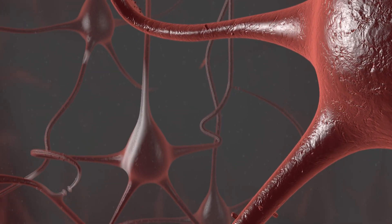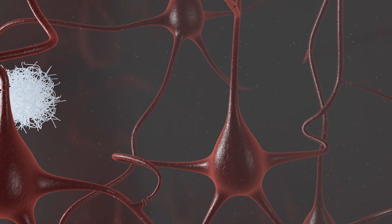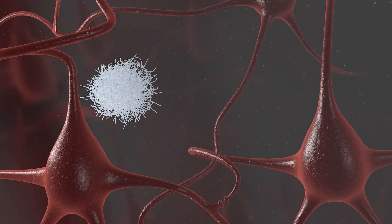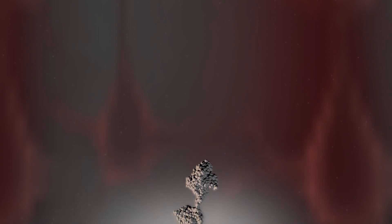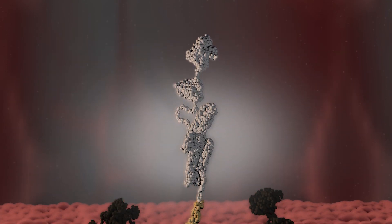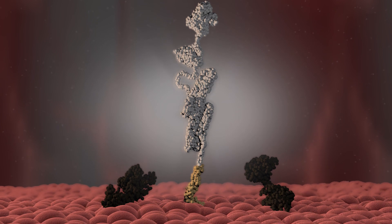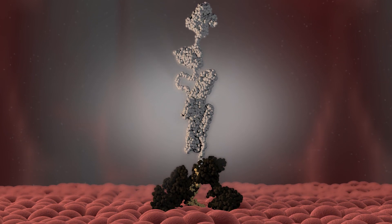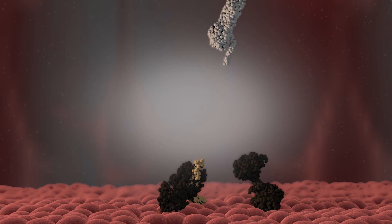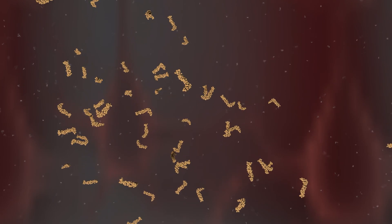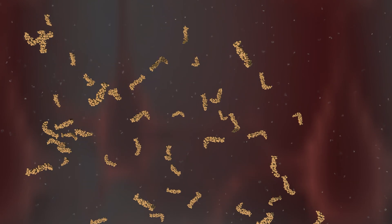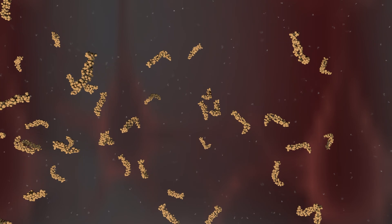The first hallmark is an accumulation of beta-amyloid plaques in the spaces around brain cells, also called neurons. Amyloid precursor protein, or APP, is a protein that is embedded in the neuron's cell membrane. Scientists think APP helps neurons stay healthy. In a healthy brain, when APP gets old, the brain chops it up and removes the snippets. But sometimes, the APP breaks apart incorrectly and forms sticky molecules called beta-amyloid.